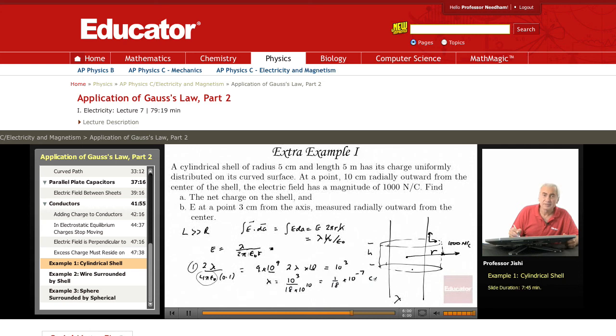Coulombs per meter. Now since the length is 5 meters, total length, so total charge Q is lambda times L. So it's 5 meters over 18 times 10 to the minus 7 coulombs. That's the total charge.